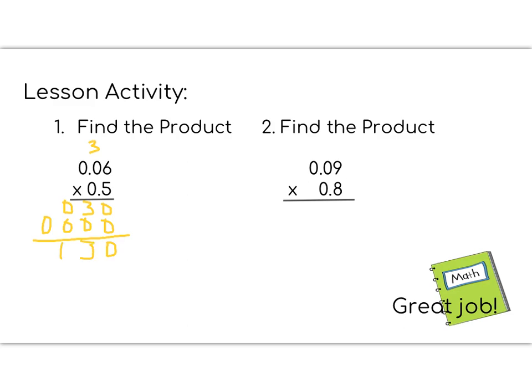0, 3, 0, 0. Now let's place our decimal. So our decimal, we're going to need 1, 2, 3 place values all together. So we're going to move over 1, 2, 3 place values. So our answer is 0.030. So multiply just like it's a regular number, and then count your decimal places or your swoopies to move your decimal point. You do problem number 2 in your math notebook. Great job, 5th graders!